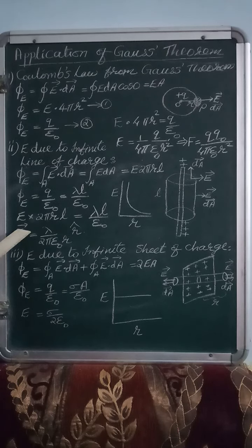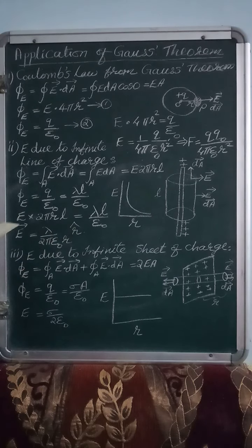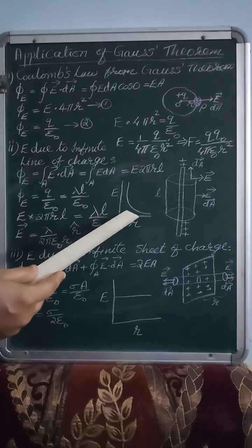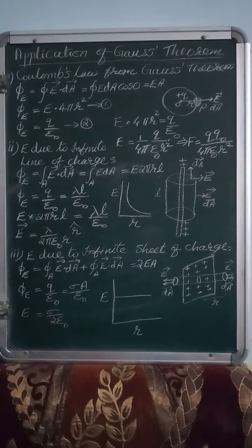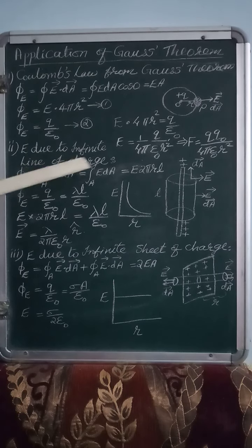In vector form, we write E with the unit vector R-cap to indicate direction. We know that E is inversely proportional to R. So when we plot the graph of E versus R, as R increases, E is decreasing. This is the formula for the electric field due to infinite line charges.